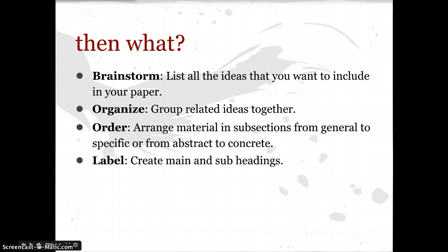So now we have all of those things — we have our working thesis, our audience, and our purpose. Now we want to list all the ideas that we want to include in our paper. At this point we have lots of notes taken from our sources and we want to just start lining everything up. What do we have to work with here? Then begin to group related ideas together and organize that list. It's not going to be just source by source — these ideas are going to overlap and intertwine. So it's important to group those related ideas together even before you start writing your outline.